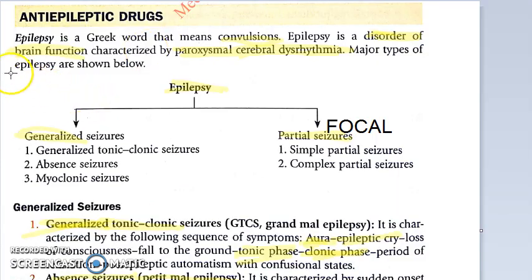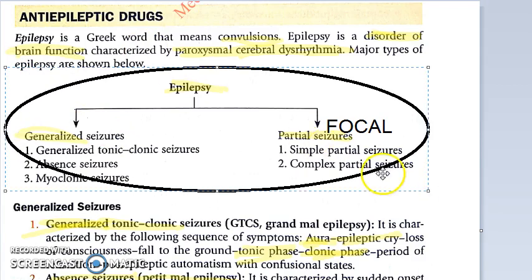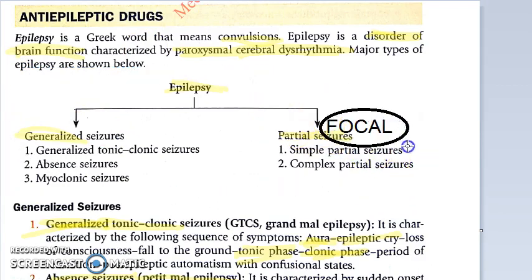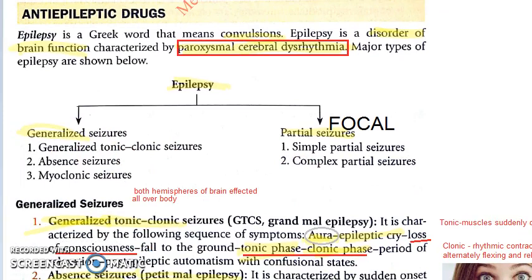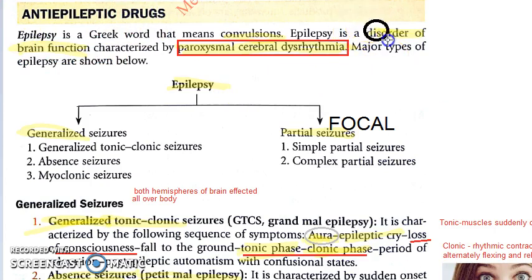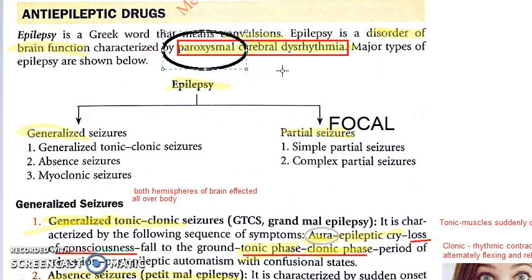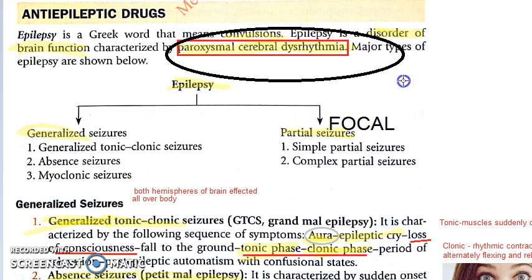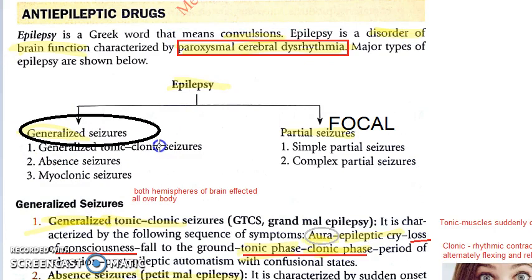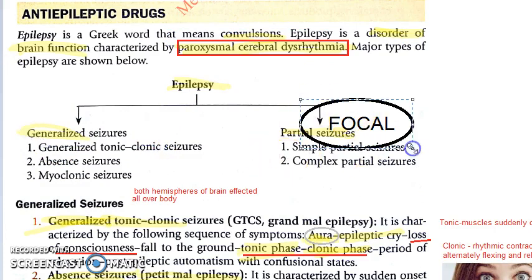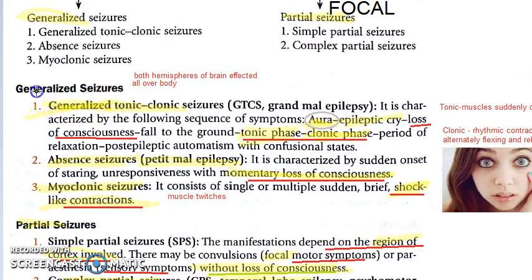There are two types of epilepsy: generalized and focal (partial) seizures. Epilepsy means convulsions — it is a disorder of brain function characterized by paroxysmal cerebral dysrhythmia, where paroxysmal means random. In generalized seizures, both hemispheres of the brain are affected. In focal seizures, usually only one portion of the brain is affected.